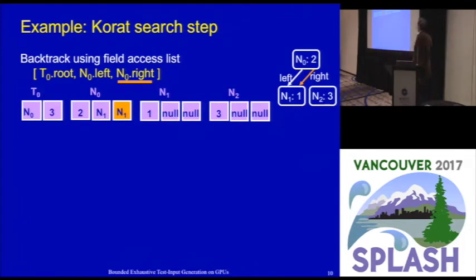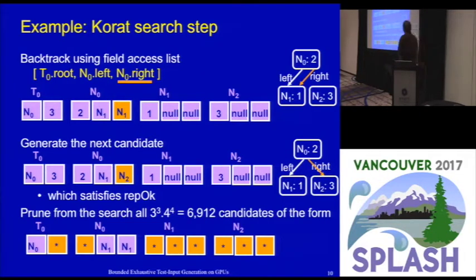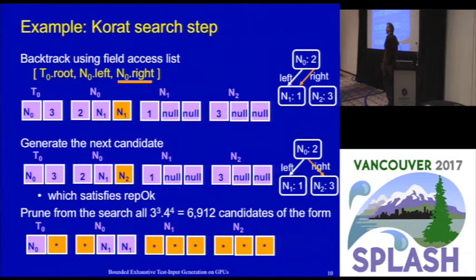Here is the candidate representation and the corresponding data structure. The last field accessed was n0.right. Korath tries the next value for this field, which according to the defined domains is n2. So that field gets the value n2, producing a valid tree in one step. The key observation is that in this one step, many candidates are pruned: there is no need to check any candidate that has n0 as root and n1 as both left and right child of n0, regardless of other field values, assuming deterministic execution of RepOK.